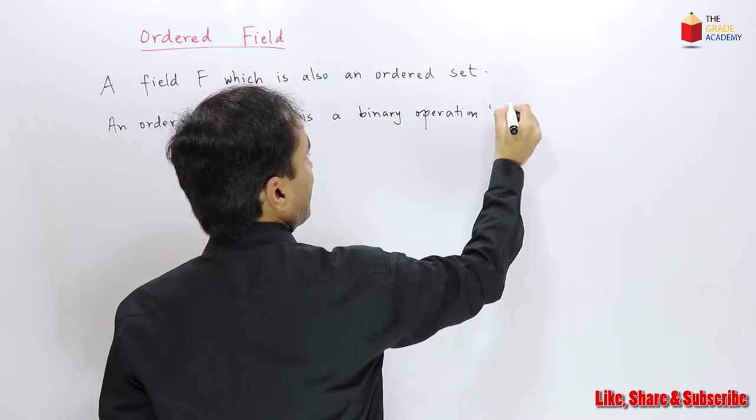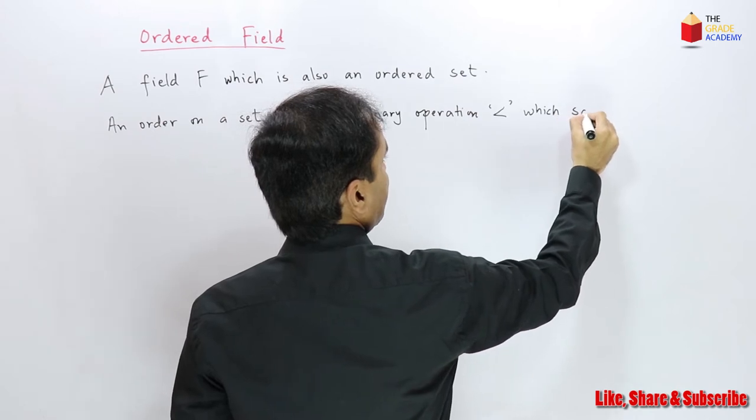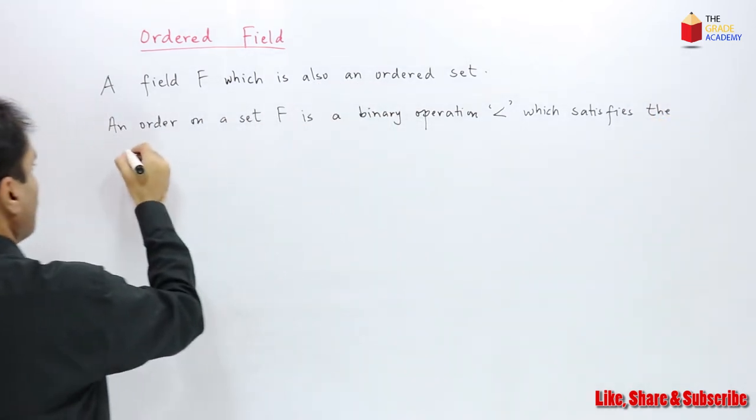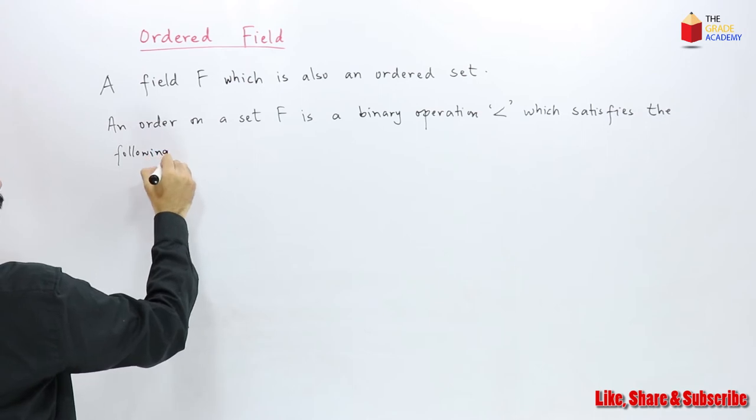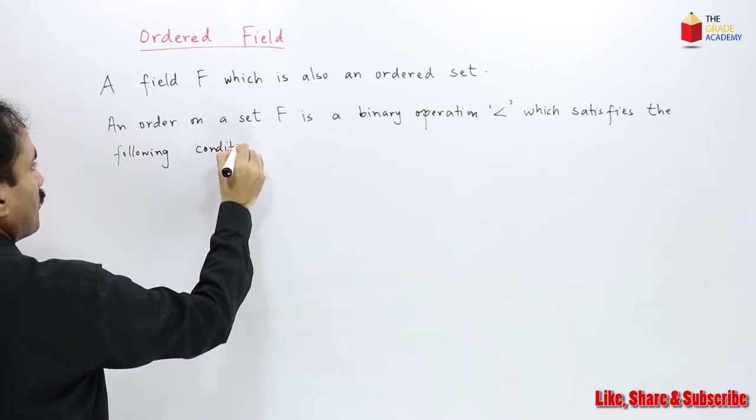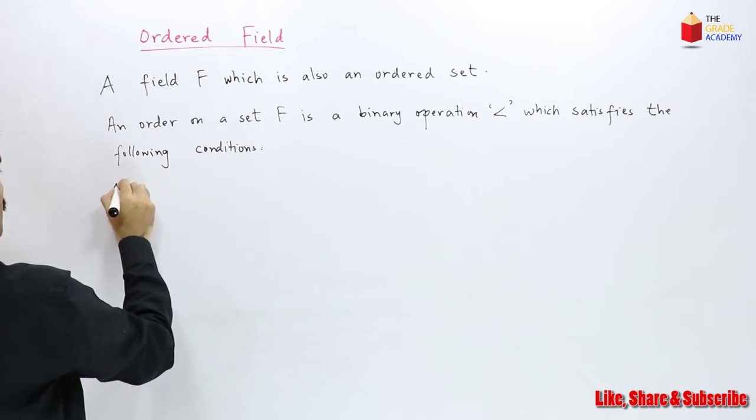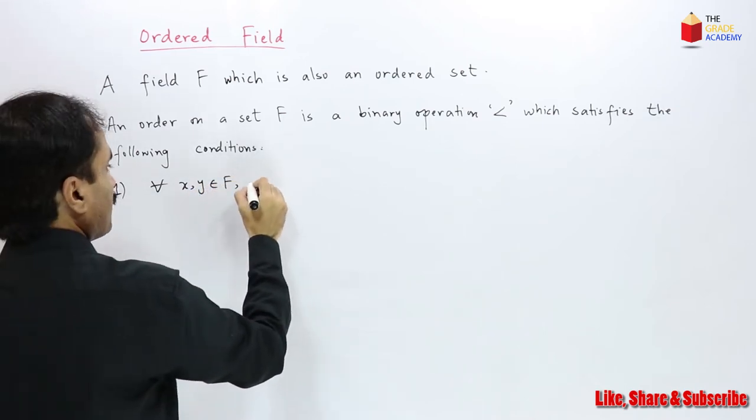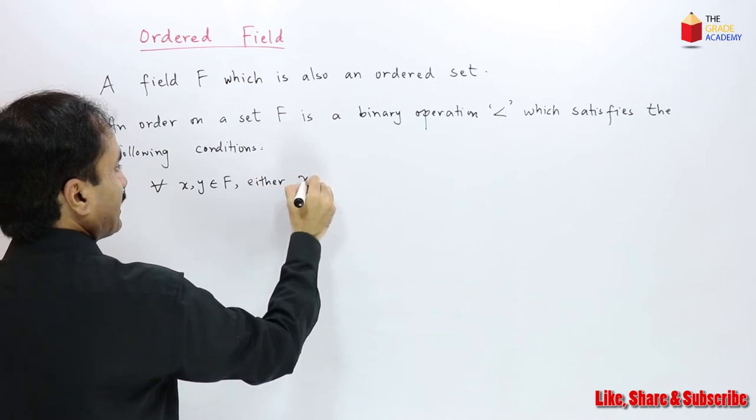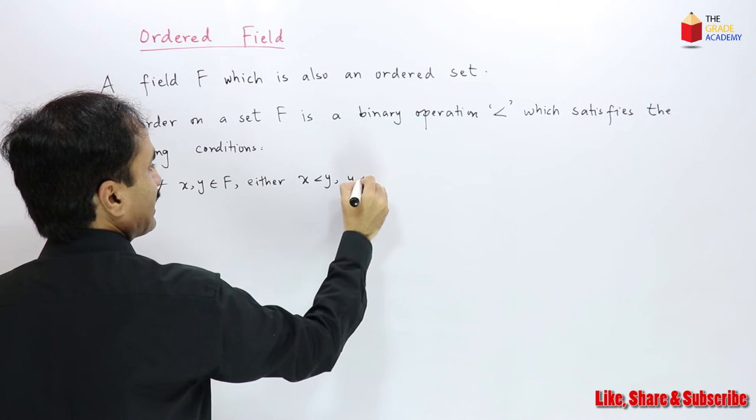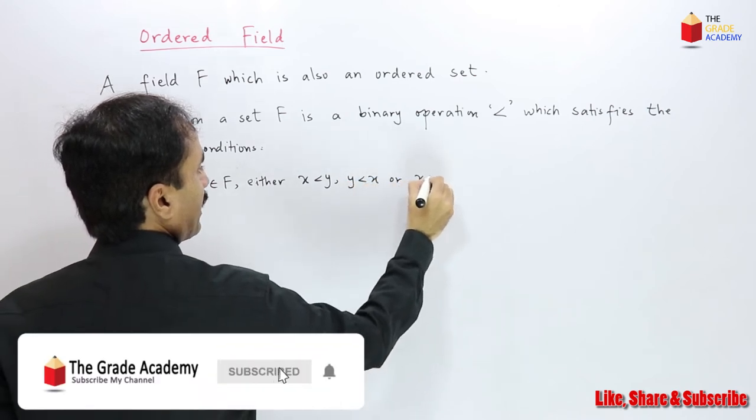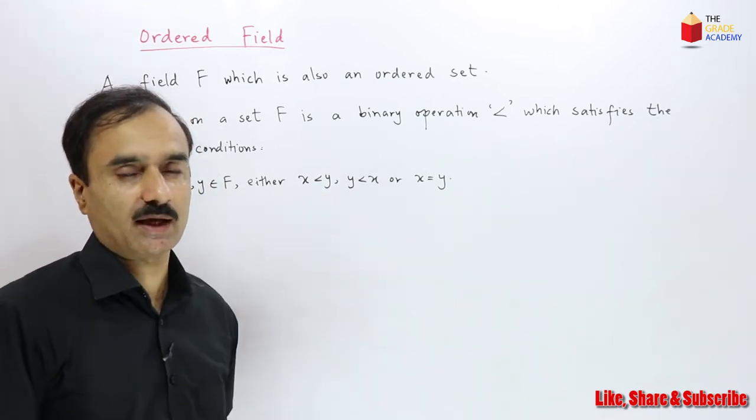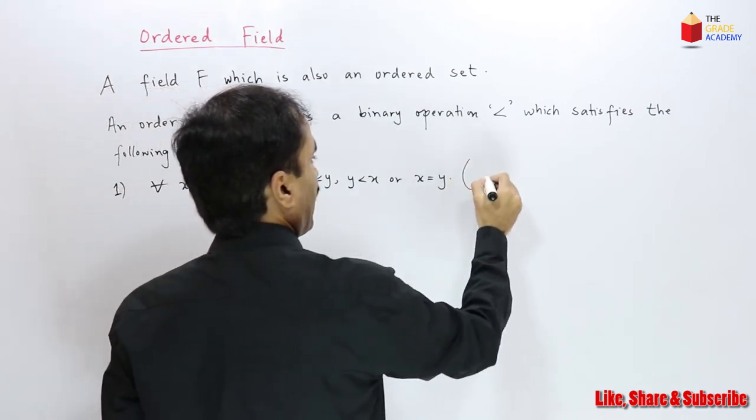This less than operation satisfies the following conditions. Number one: for all elements x, y belonging to F, either x is less than y, or y is less than x, or x and y are equal. Only one of these three statements can happen at a time. This property is called trichotomy property.